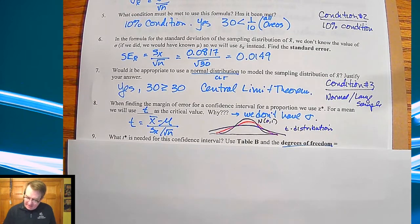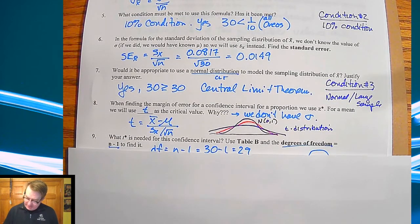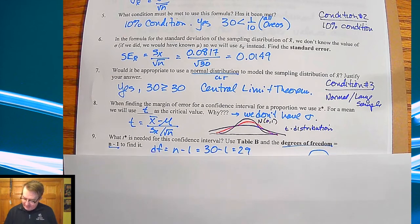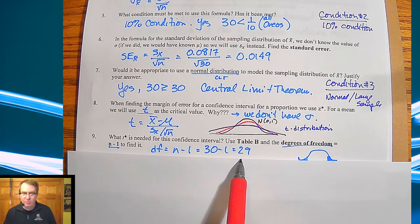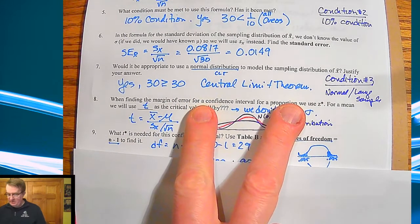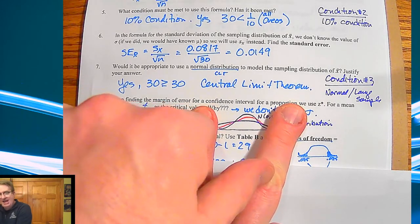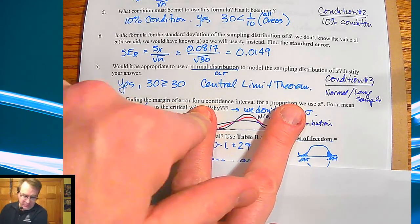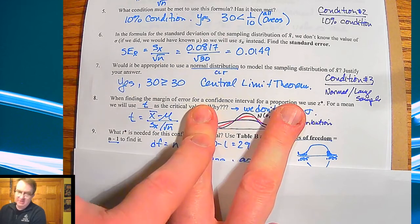So what is t star needed for this confidence interval? So use table b and degrees of freedom. Okay so our degrees of freedom is 29. And so the reason why it's 29 is remember that when you're picking objects the second to last pick picks the last two. So if I have two choices left if you pick this one then this one has to go. There's no choice for where that last one goes and vice versa. If I pick this one then this one has no place to go.